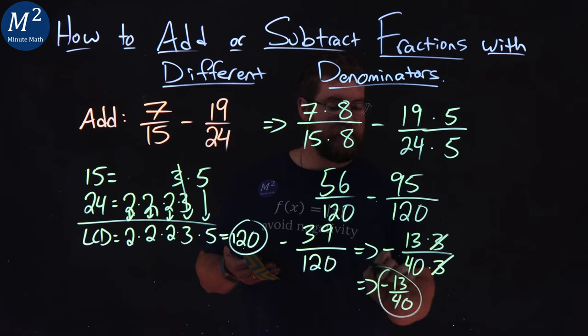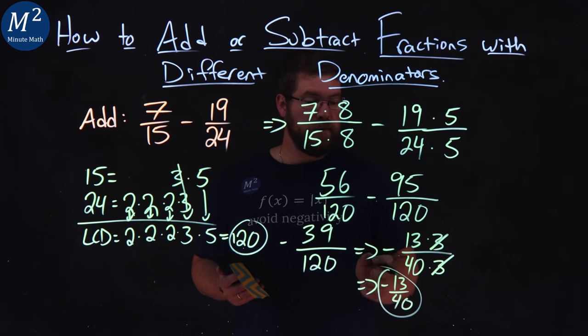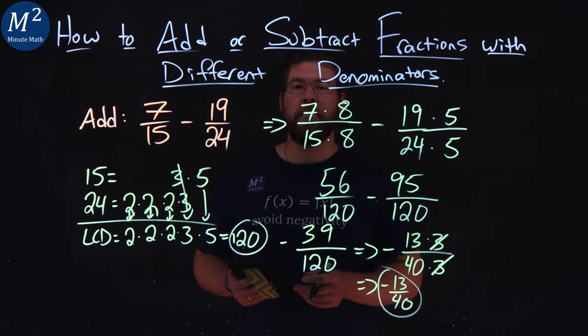As our final answer simplified, 7/15 minus 19/24 is equal to negative 13/40.